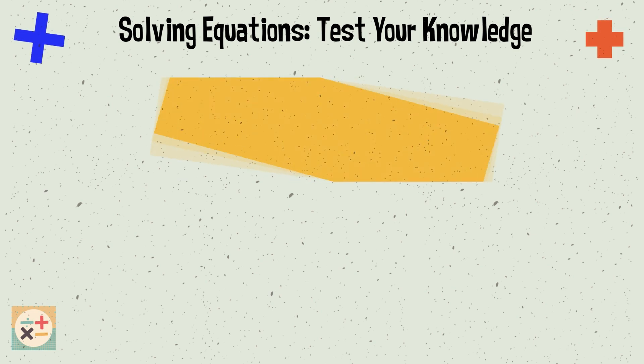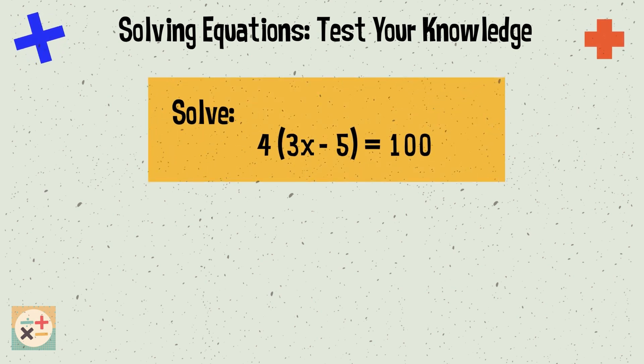Question 2. Solve 4 multiplied by 3x minus 5 equals 100.